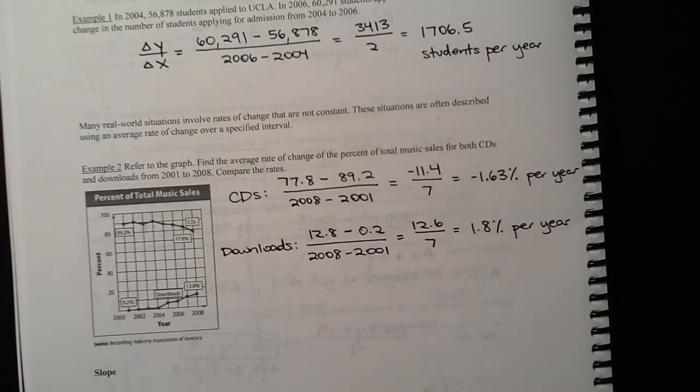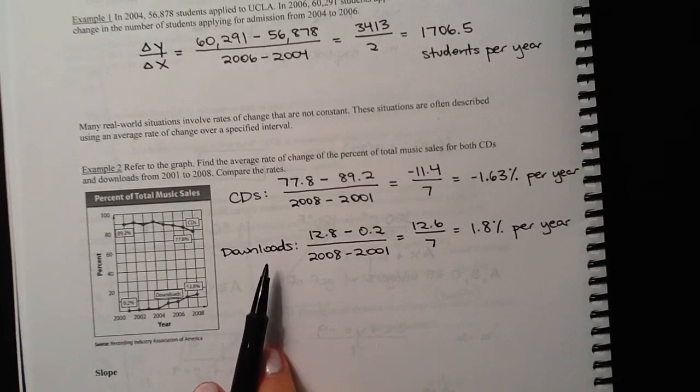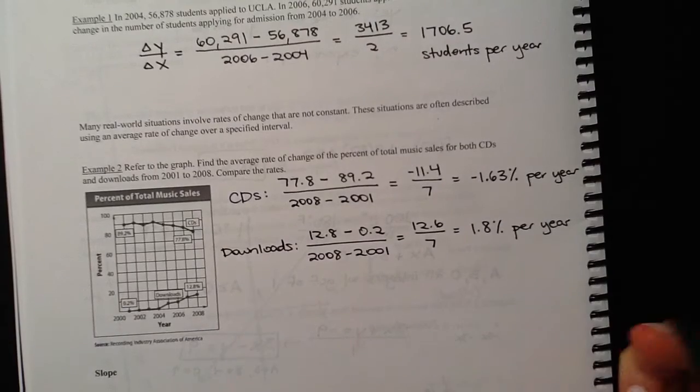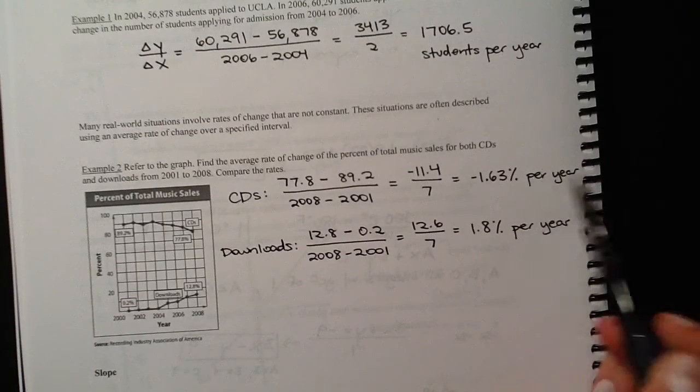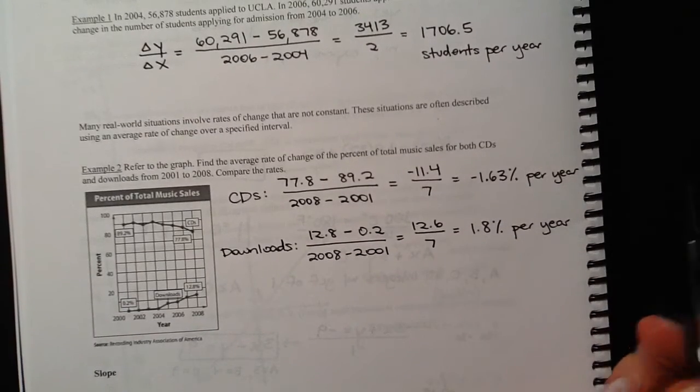So if you're comparing the two of these, this makes sense. There's kind of a trade-off. Fewer people are buying CDs because more people are downloading music. So you can see that these are actually really close to being the same number. Okay, that's it for the first half.